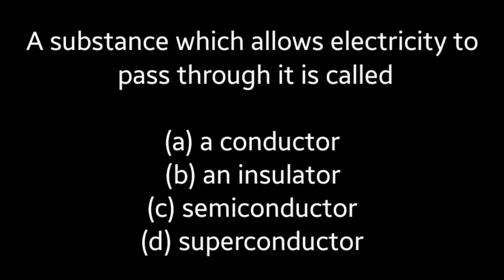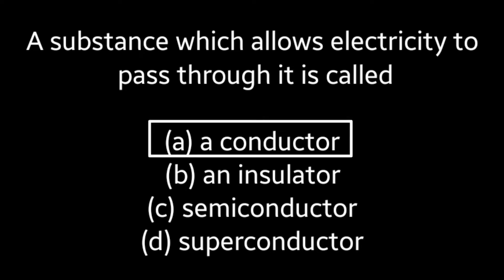Next question: A substance which allows electricity to pass through it is called (A) a conductor, (B) an insulator, (C) semiconductor, (D) superconductor. Answer is Option A: a conductor.